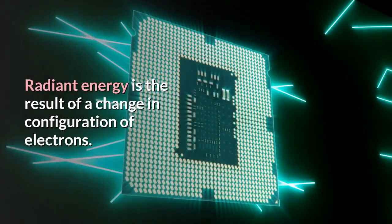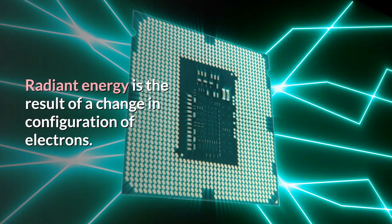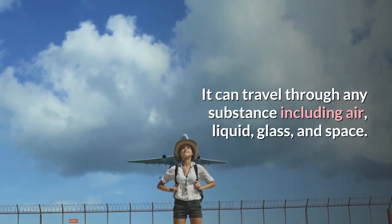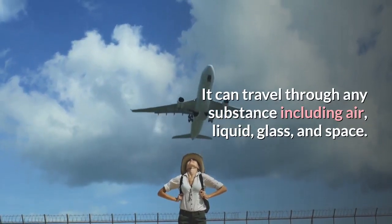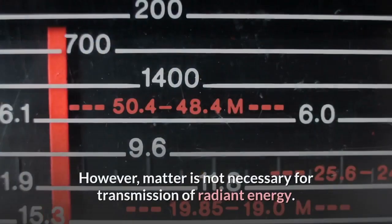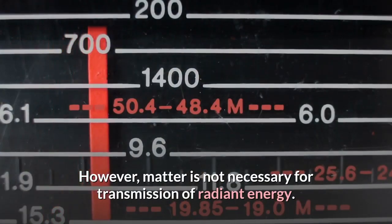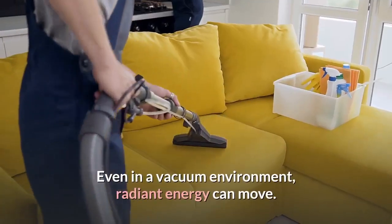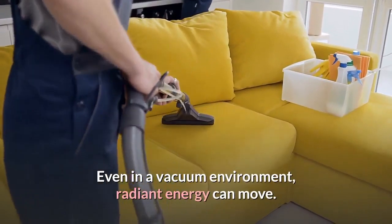Radiant energy is the result of a change in configuration of electrons. It can travel through any substance including air, liquid, glass, and space. However, matter is not necessary for transmission of radiant energy. Even in a vacuum environment, radiant energy can move.